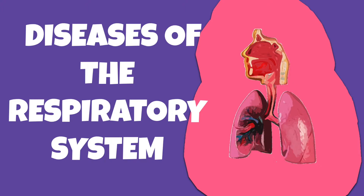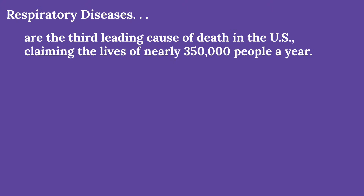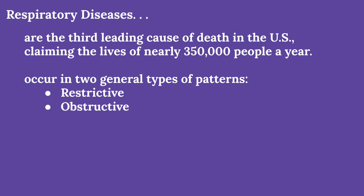But sometimes things can go wrong with the organs within the respiratory system, causing a respiratory disease. Today we're going to discuss some of those diseases. Respiratory diseases are the third leading cause of death in the United States, and can be divided into two main types: restrictive respiratory diseases and obstructive respiratory diseases. We're going to talk about how they differ and some diseases that fall into each category.